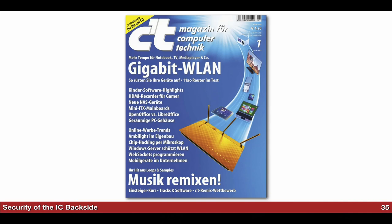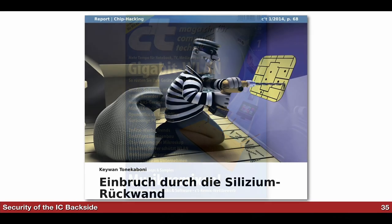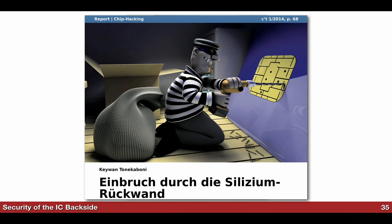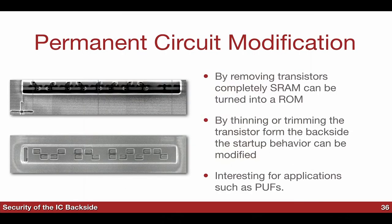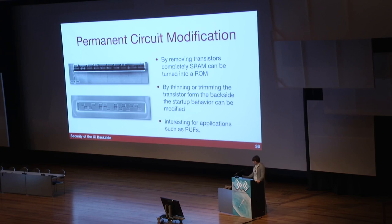Einer unserer Angriffe ist in der ersten Ausgabe von c't 2014 beschrieben — es erklärt viele unserer Angriffe. Zurück zum SRAM: wir wussten, was der SRAM war. Wir haben einen zweiten SRAM-Bereich genommen und verhindert, dass er Daten speichert, die wir nicht speichern wollen. Wir haben Löcher gemacht und richtig durchgebohrt — die Gates sind quasi kurzgeschlossen. Der SRAM ist festgesetzt.